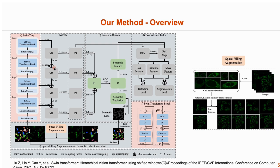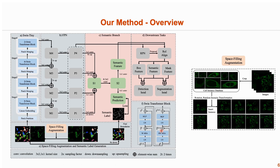First, to ensure adaptability to variance in cell size, shape, and texture, we adopt the Swin Transformer as the backbone network to model both global and local features.